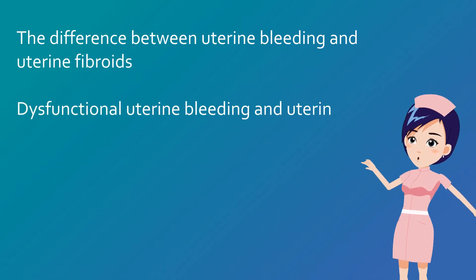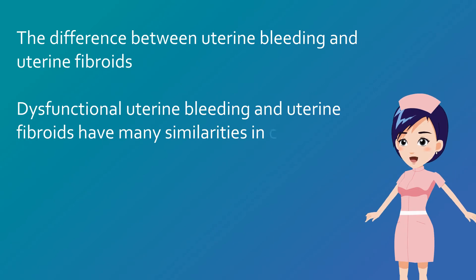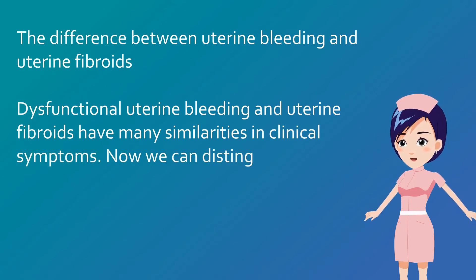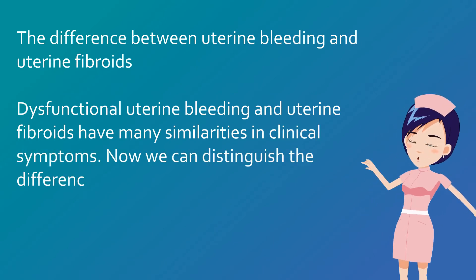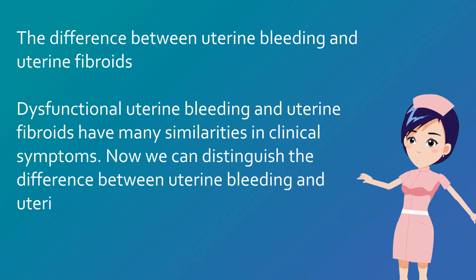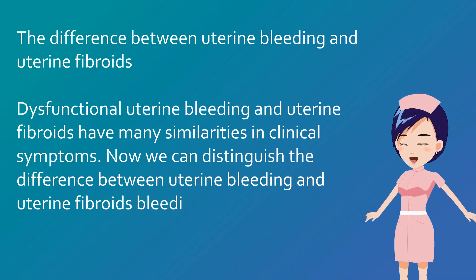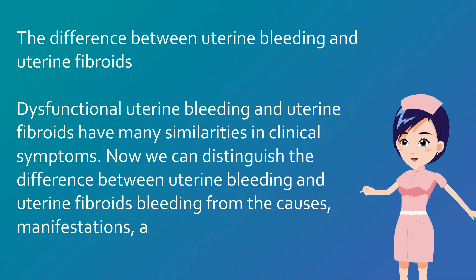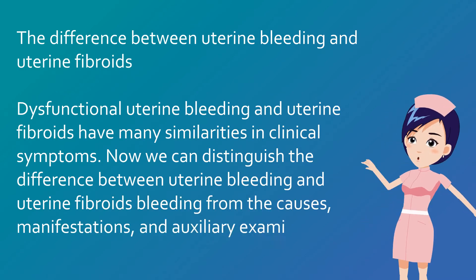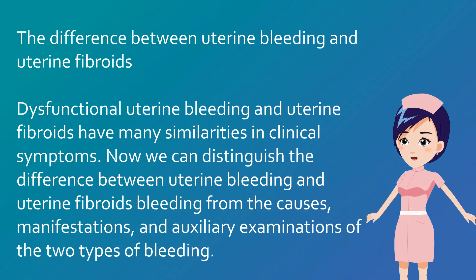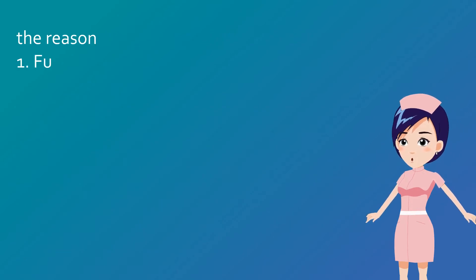Dysfunctional uterine bleeding and uterine fibroids have many similarities in clinical symptoms. We can distinguish the difference between these two conditions from their causes, manifestations, and auxiliary examinations.